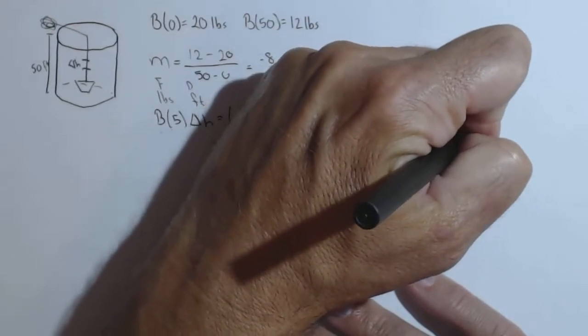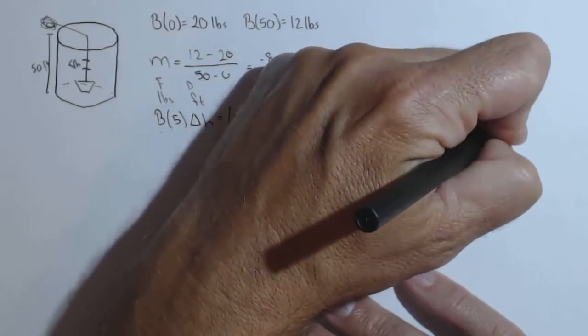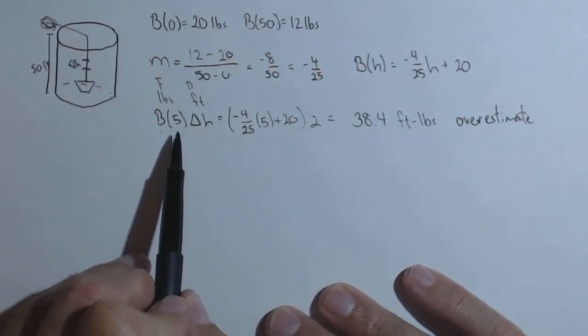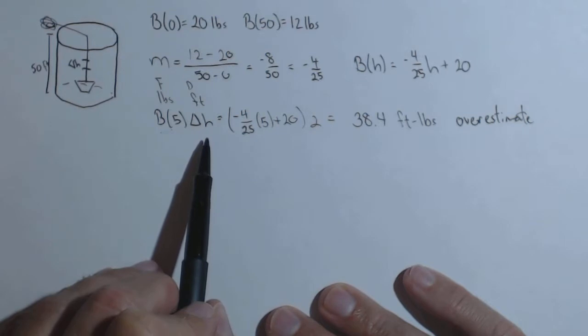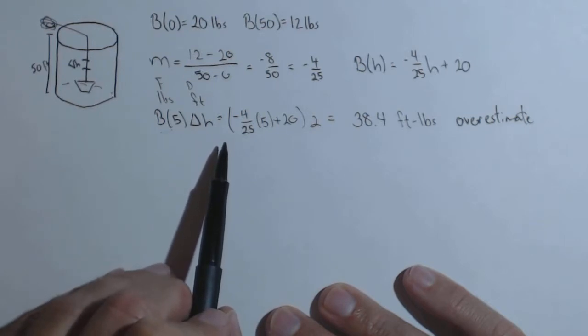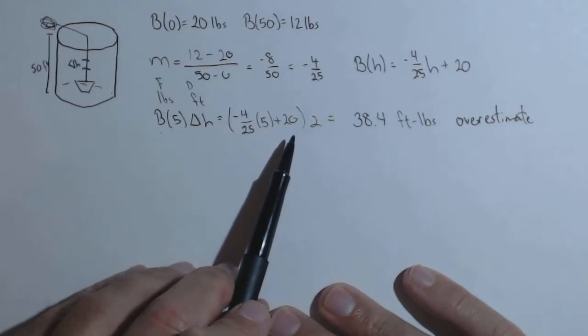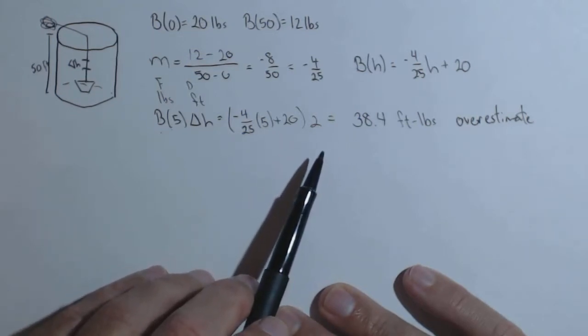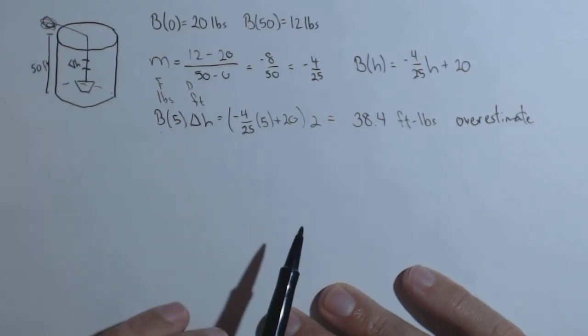Now, this is going to be an overestimate of the actual. The reason being is that our force is decreasing, so our force at 5 feet is higher than our force at 6 feet and it's higher than our force at 7 feet, but we went ahead and used the force at 5 feet for the whole thing. So this is going to be an overestimate of how much work it takes to move from 5 to 7 feet.